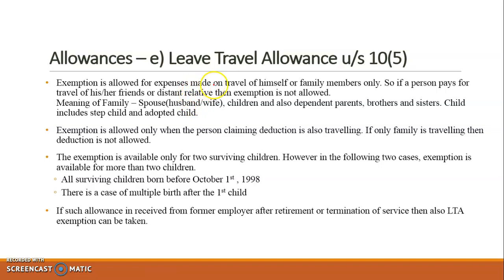The exemption is allowed for all expenses made on travel of the employee himself or family members. Family members include: spouse, children (who should be unmarried and dependent), parents, brothers and sisters (who should also be unmarried). Children include stepchildren as well as adopted children. All air tickets, rail tickets, or bus fares for the employee and family members can be aggregated and claimed as an exemption.